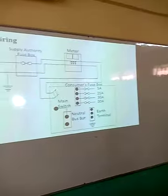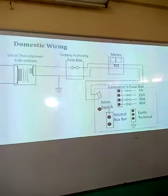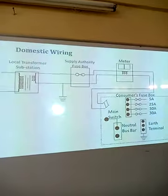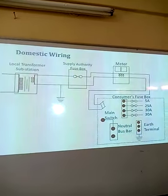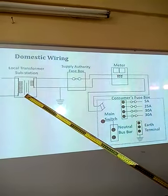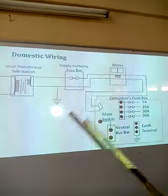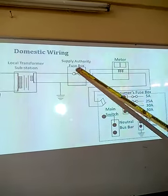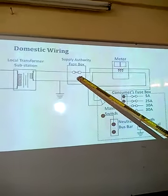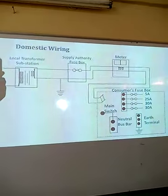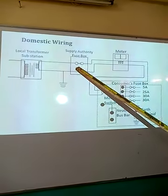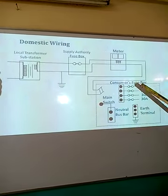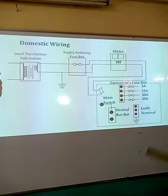On the screen is the flow of how domestic wiring is done. Right from the beginning, we start from the local transformer substation. From here, the power is being channeled to the supply authority fuse box, then to the meter, and then to the consumer unit.